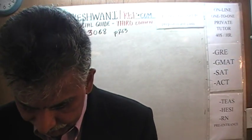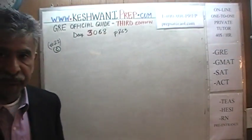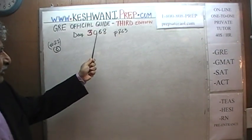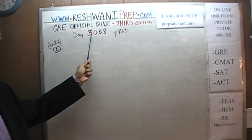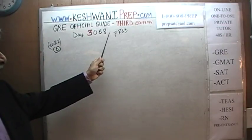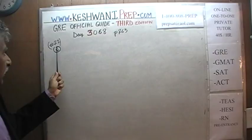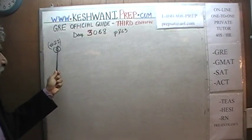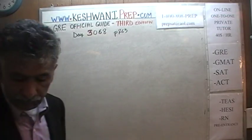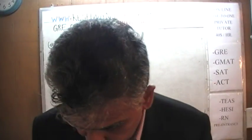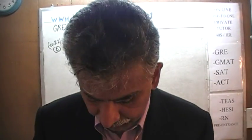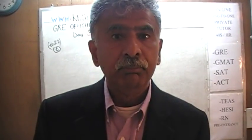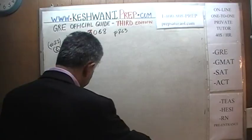Today is our lesson number 68 — Day 3068. The 3000 indicates we are in the third edition, day 68. We are on page 263, working on problem number 21, the very last problem on that page. We did parts A and B yesterday. Today we will do part C. Let's take a look at it.